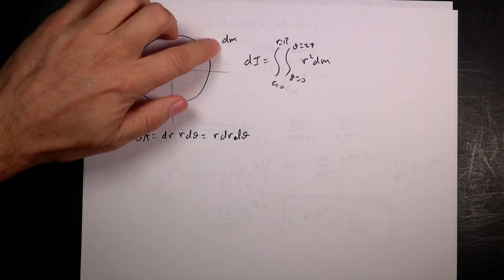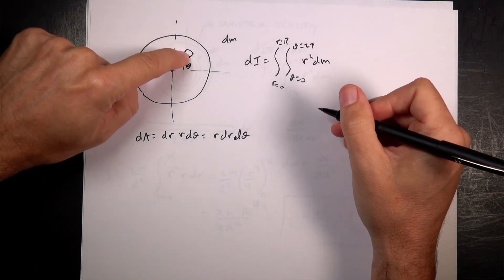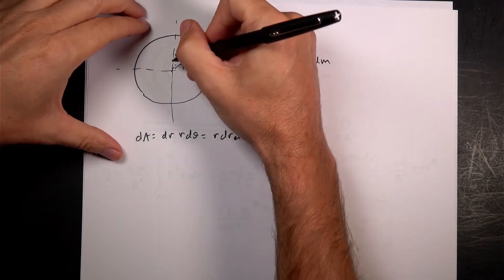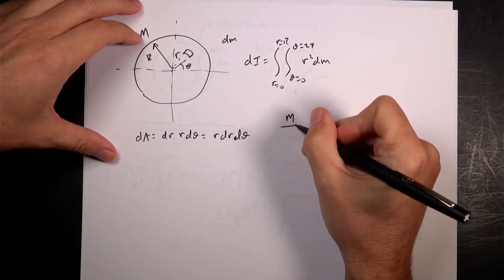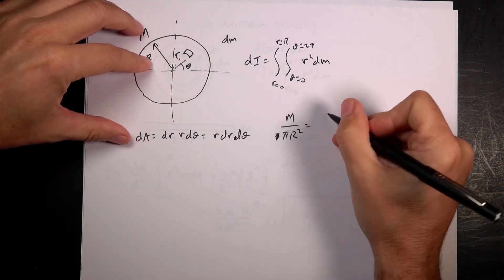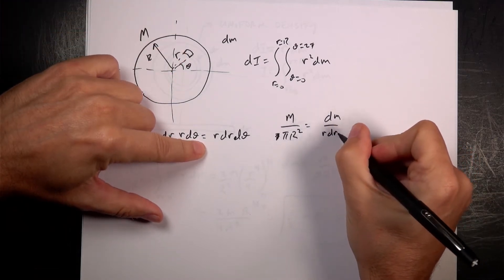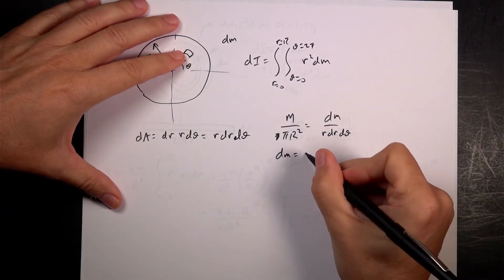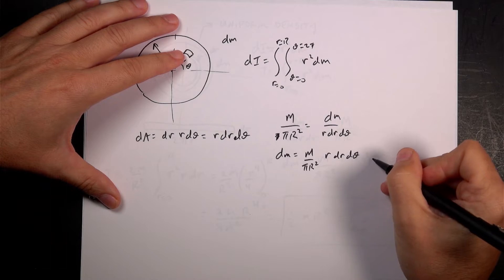I need dm in terms of that. The mass of the piece divided by its area equals the mass of the whole thing divided by its area. Radius big R, mass capital M. So M over πR² equals dm over r·dr·dθ. Therefore dm equals M over πR² · r·dr·dθ. I can put that in to the integral.